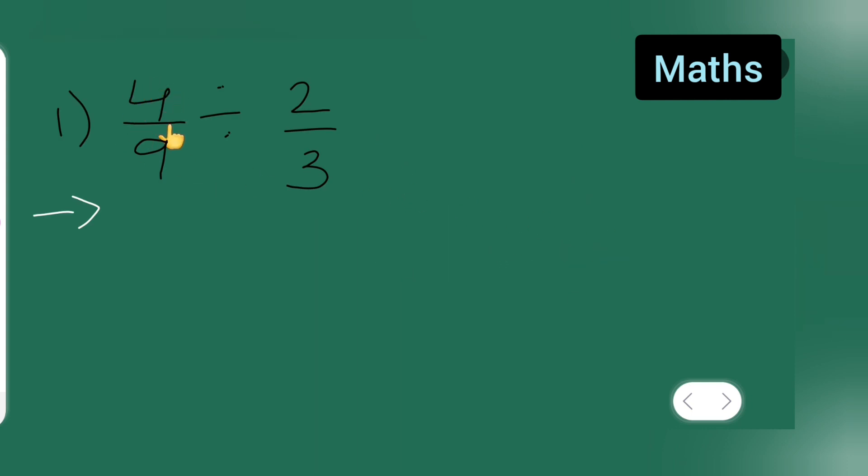So here the question is given. You can take down 4 upon 9 divided by 2 upon 3. So first what you'll have to do is write 4 upon 9 as it is. Now what you will do is multiply. Put multiply sign and then reciprocal of this. So multiply by 3 upon 2.